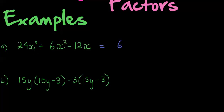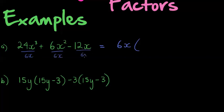Next I look at x to the power of 3: what is the most number of x's I can take from each factor? There's only one factor with just one x, so I can't take more than one. I can take one from each term, so 6x can be taken out as the common factor.